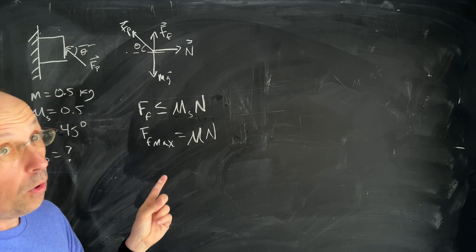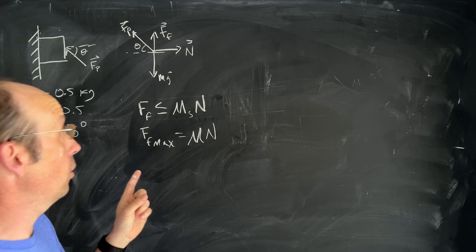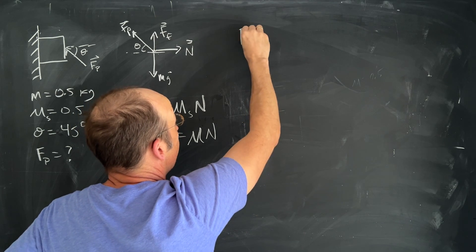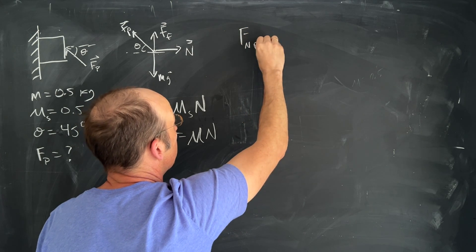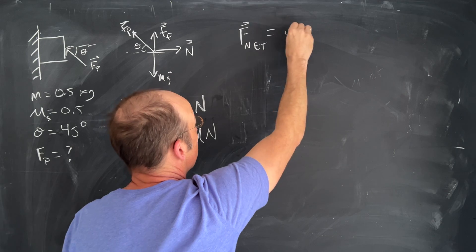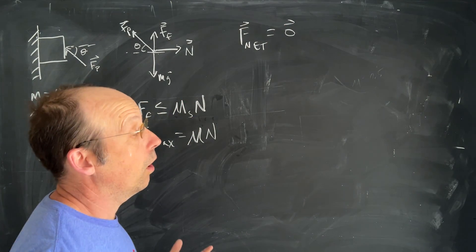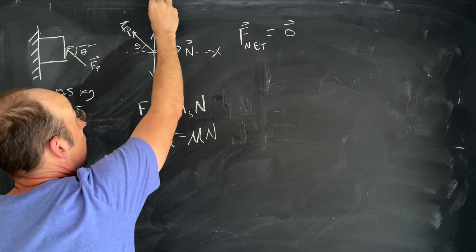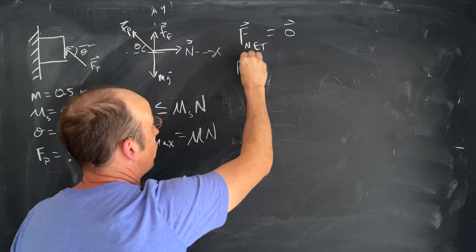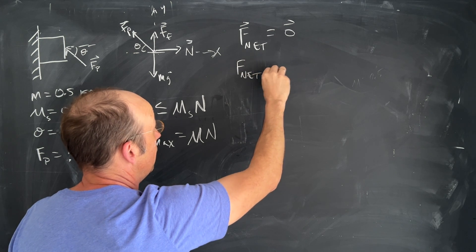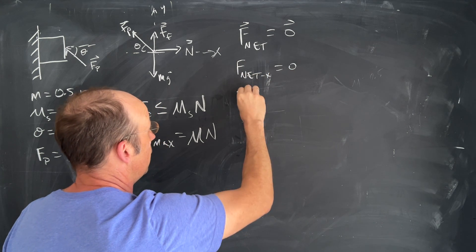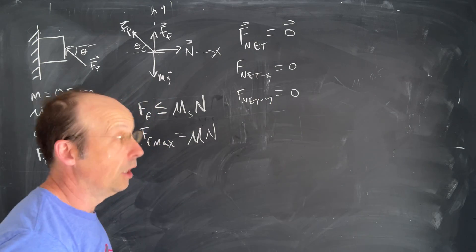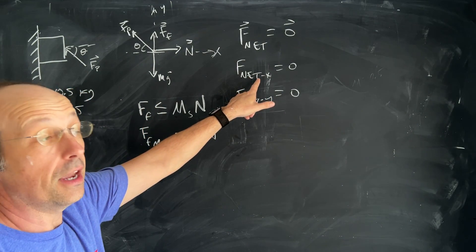Okay now we can write down Newton's second law. So Newton's second law says that the net force if it's at equilibrium, the net force f net is equal to zero and that's the zero vector. Well it turns out to be easier to break this into an x direction and a y direction so I could rewrite that as f net x is equal to zero, f net y is equal to zero.